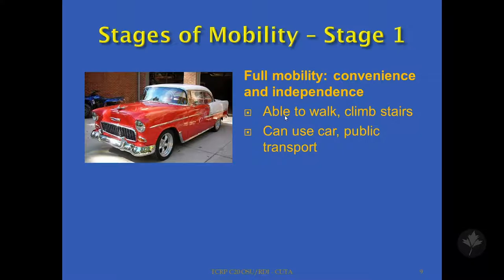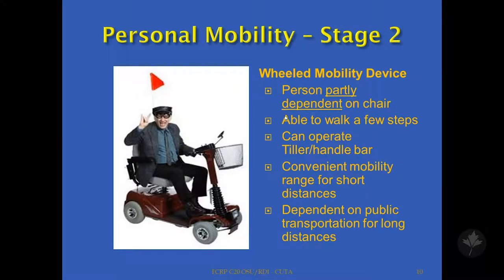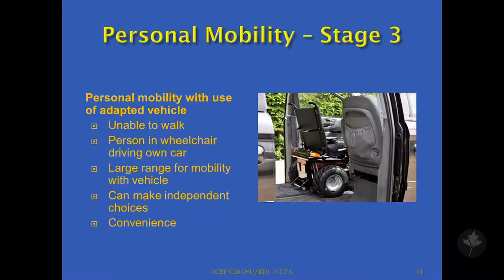To identify some of the stages of mobility: stage one is where the person has full mobility, convenience and independence — able to walk, climb stairs, can use a car and public transport. In stage two, the person needs a wheeled mobility device and is partly dependent on that chair, still able to walk a few steps. They can operate with a tiller or handlebar. There is a certain convenience for mobility for short distances, but the person is dependent on public transportation for long distances and intercity transportation.